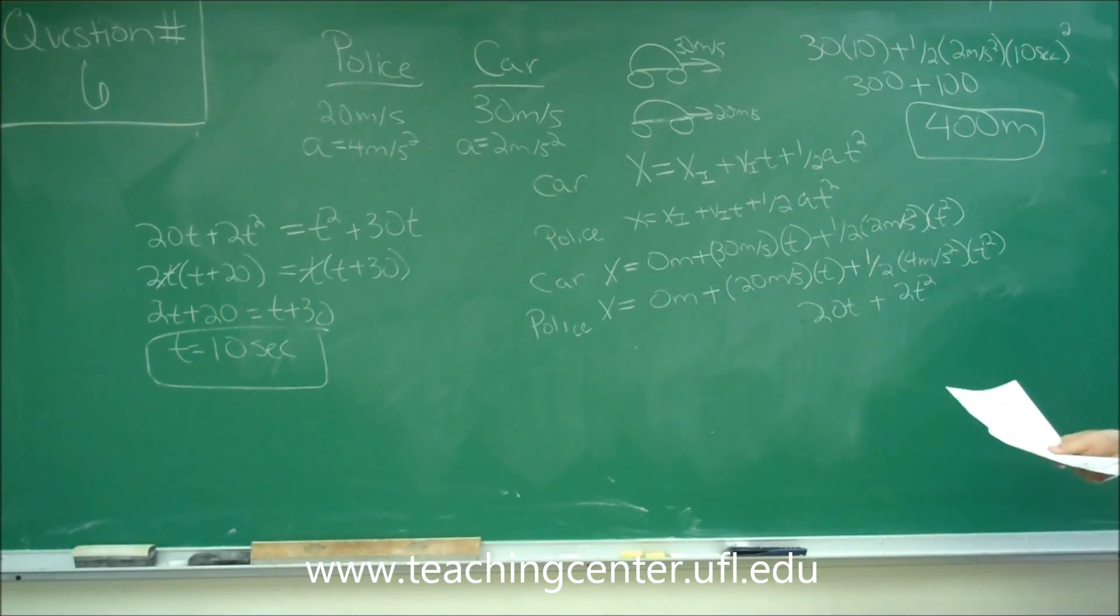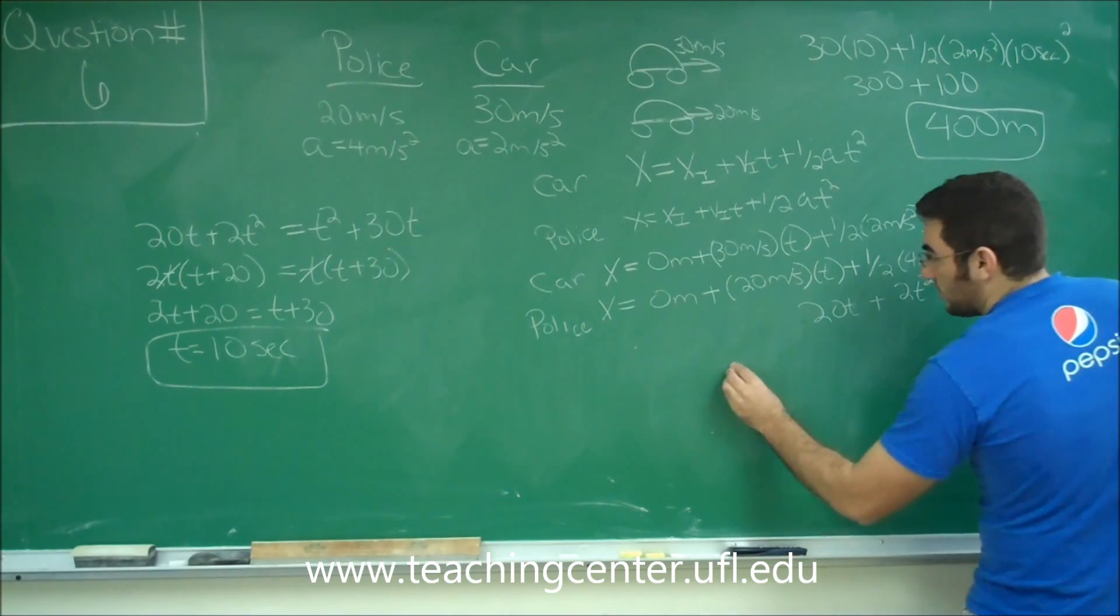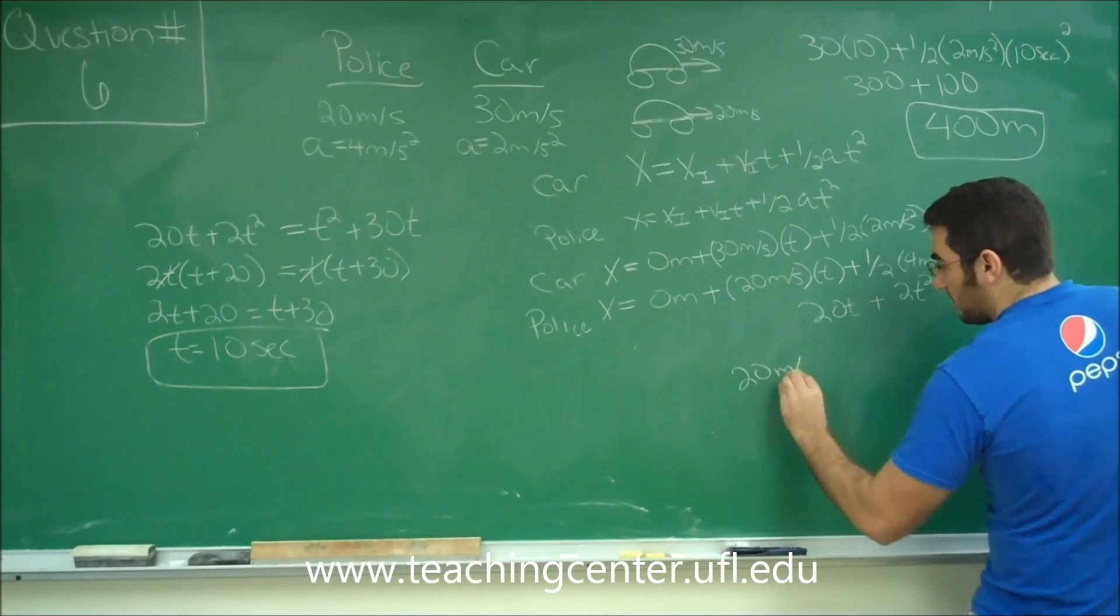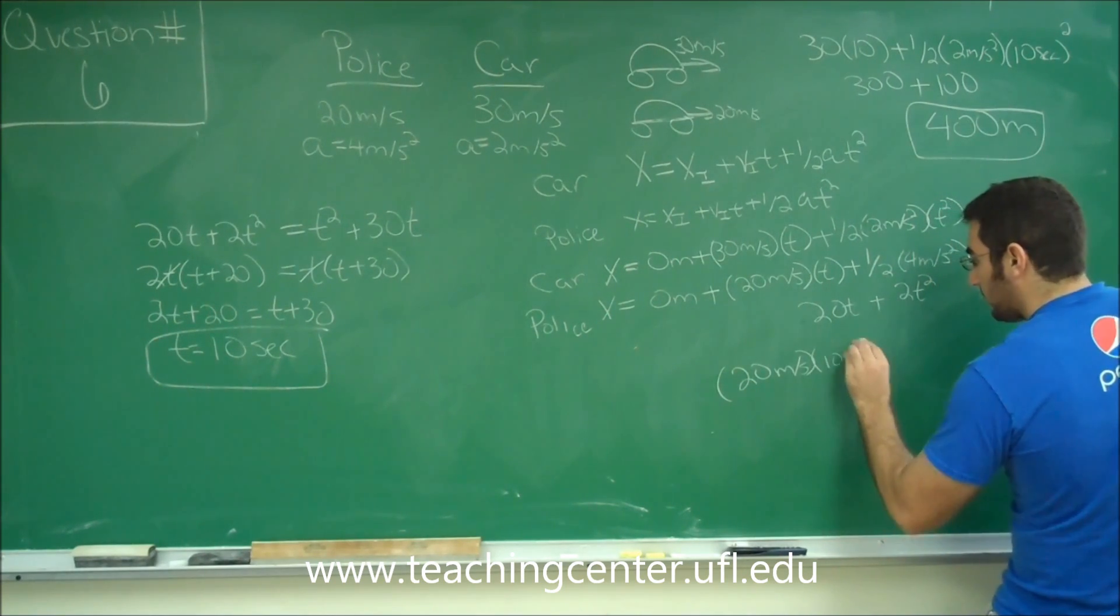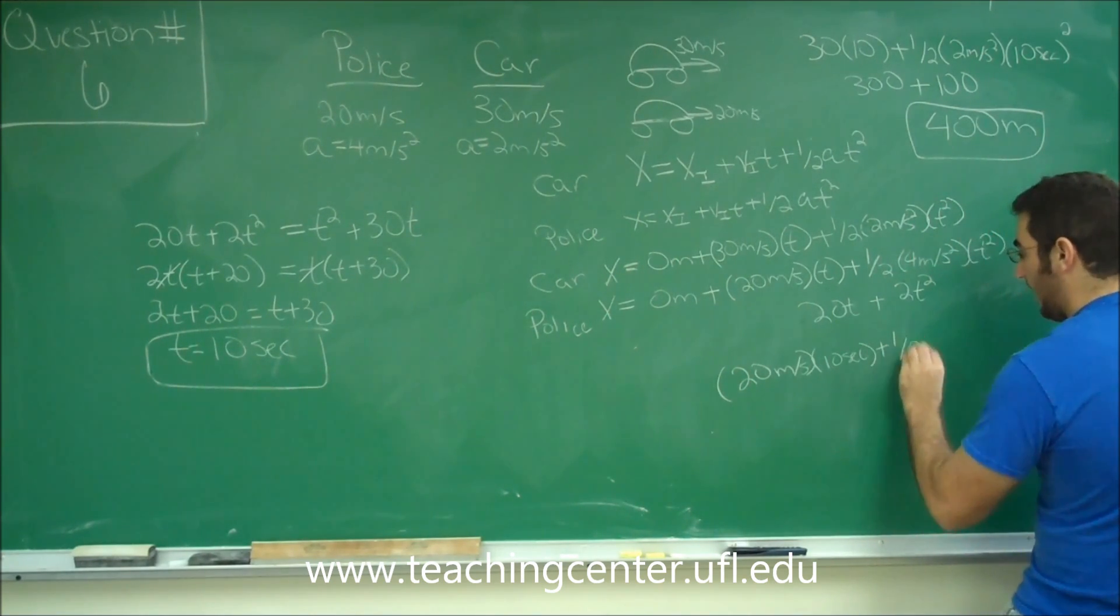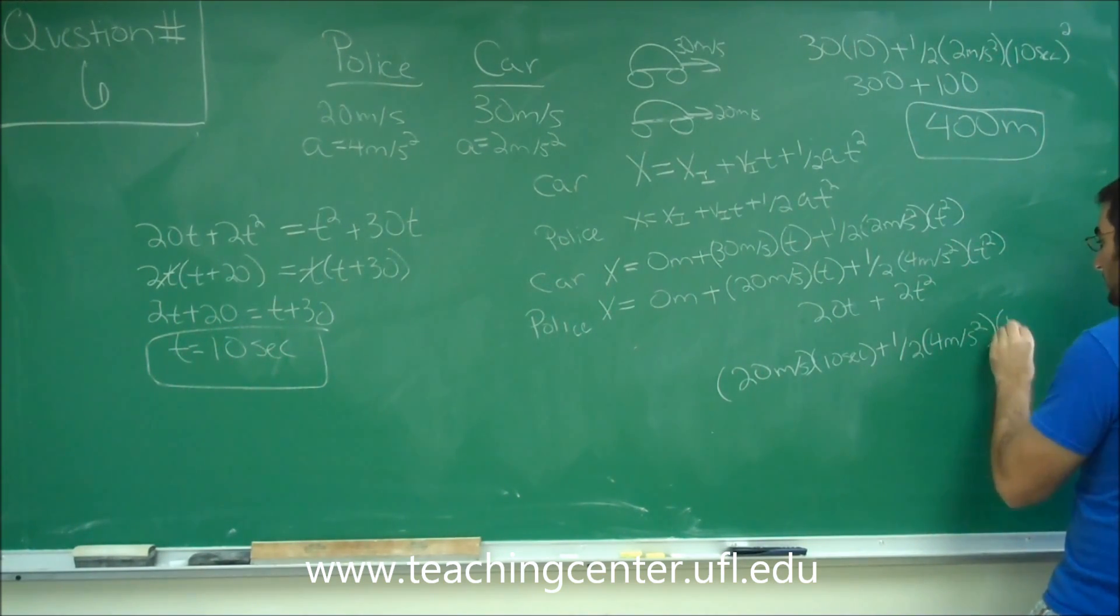And if we look at our answer choices, answer choice number 1 is 400 meters. And that is the correct answer. But if you want to check yourself, go ahead and plug in 10 seconds in for the police officer. So we have 20 meters per second times 10 seconds plus one half. Acceleration was 4 meters per second squared.